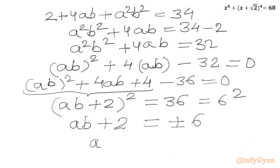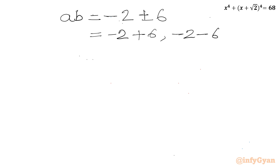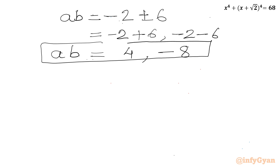From the first three terms we get (ab + 2)² = 36, which is 6². Taking square roots of both sides: ab + 2 = ±6, so ab = -2 ± 6. With the plus sign: ab = 4; with the minus sign: ab = -8.